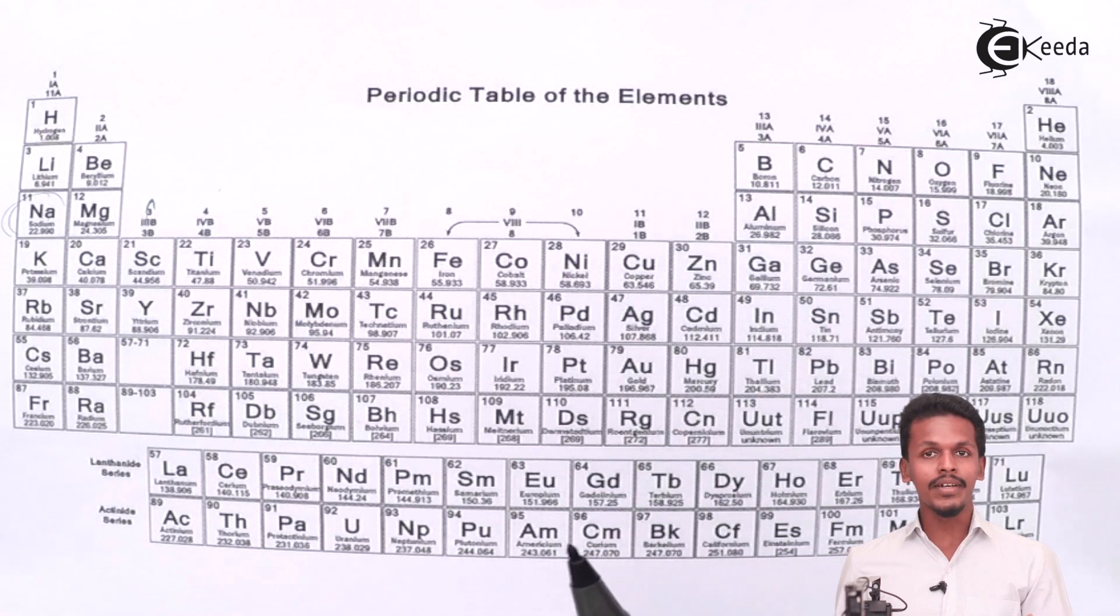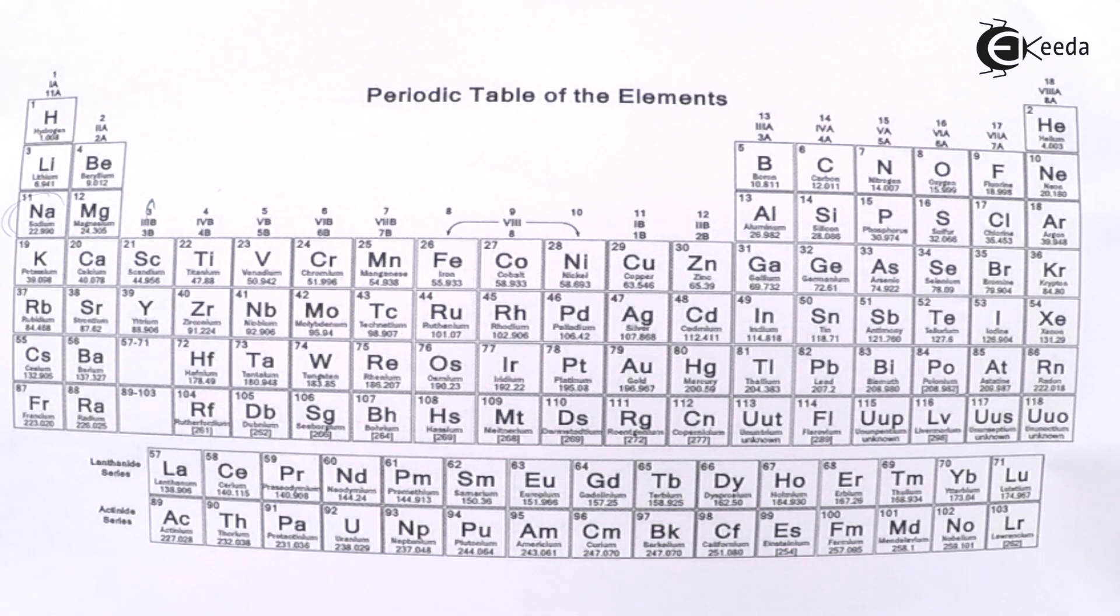The prominent names like homologous series of Cook and Mendeleev as well as Newland's octave, these all were the prominent things that evolved in the contribution for creating the modern periodic table. So that's the reason it has helped us a lot to understand various chemicals and various chemical properties of the elements.